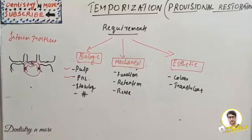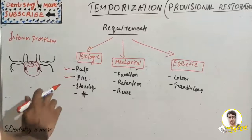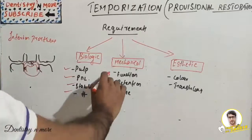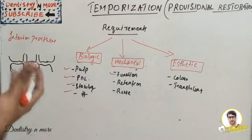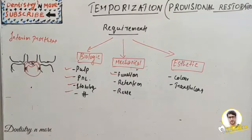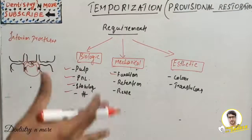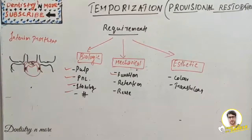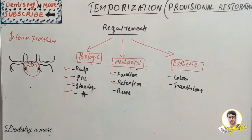Any provisional restoration will also prevent fracture of the prepared tooth. Regarding mechanical requirements, the functional aspect requires good compressive and flexural strength. The strength of the material used for fabricating provisional restorations is always lower than the final one, since it is only for a shorter period. However, it should have a minimum strength to withstand occlusal forces during that time.